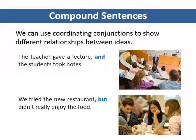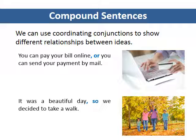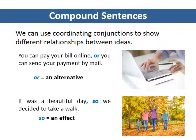We can use coordinating conjunctions to show different relationships between ideas. We use 'and' to show we are giving extra or additional information. We use 'but' to indicate contrasting information. We use 'or' to show a choice or an alternative. We use 'so' to indicate a result or an effect.